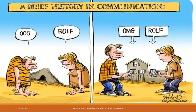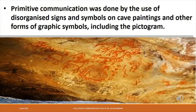This picture is a simple illustration of the means of communication in the primitive age and the modern age. As the human race evolved and people moved to different places for the want of food, shelter, and as hunter-gatherers settled into small villages, with the growing need for money, jobs, and education, the need for communication became more pressing. Primitive communication was done by the use of disorganized signs and symbols on cave paintings and other forms of graphic symbols, including the pictogram. The colorful pigments on these cave paintings were made from the juice of fruits, berries, color minerals, and animal blood, used to create depictions of primitive life on cave walls.